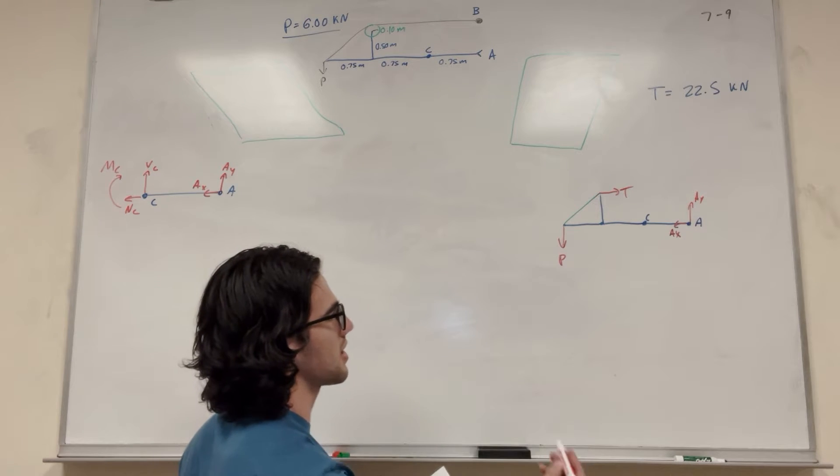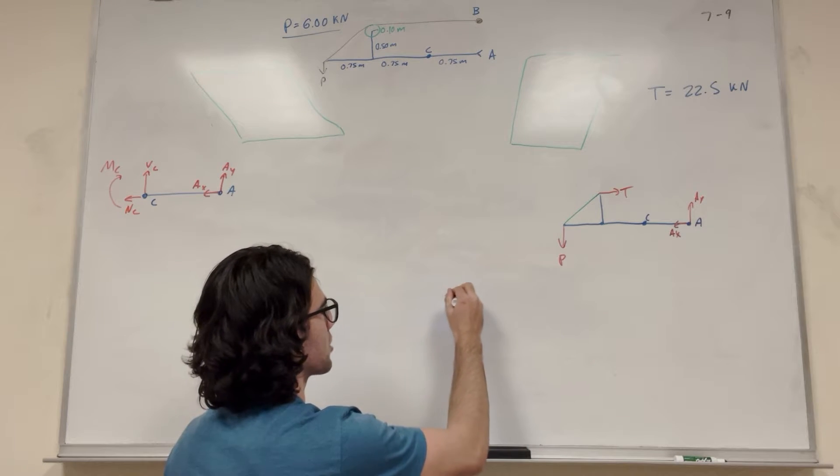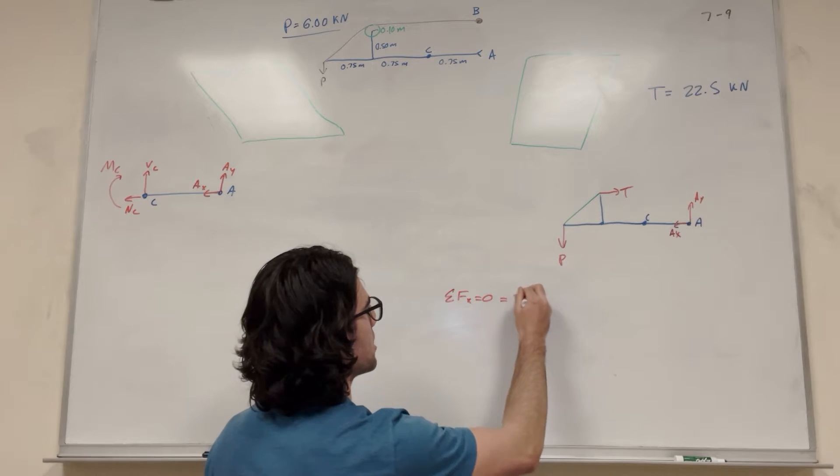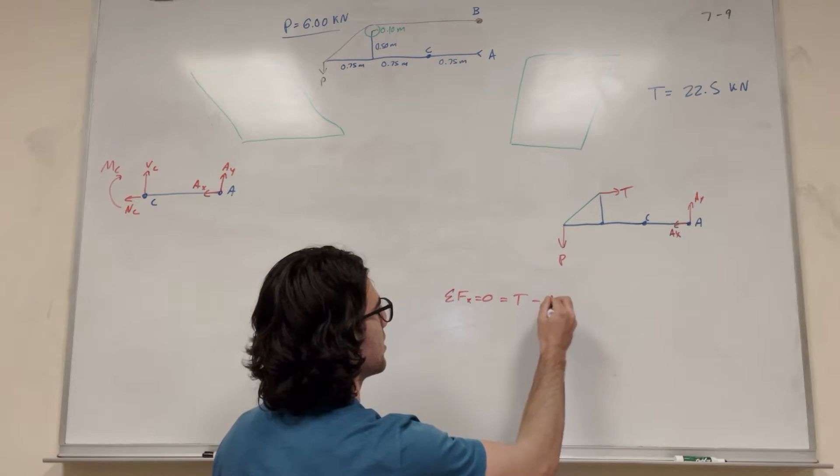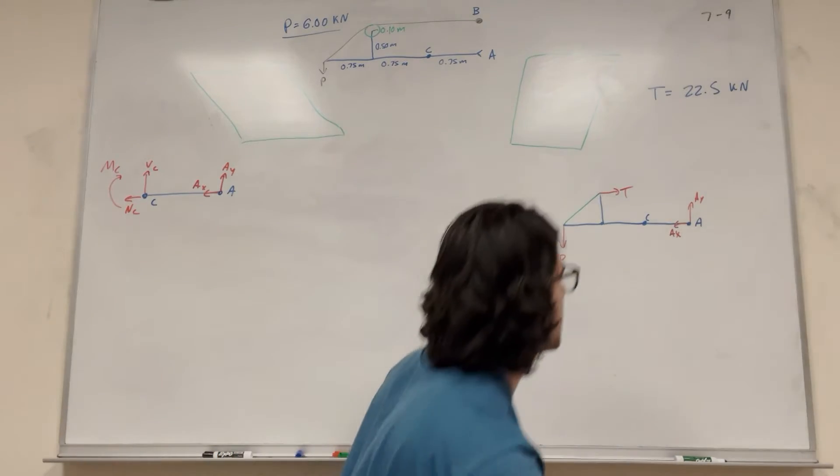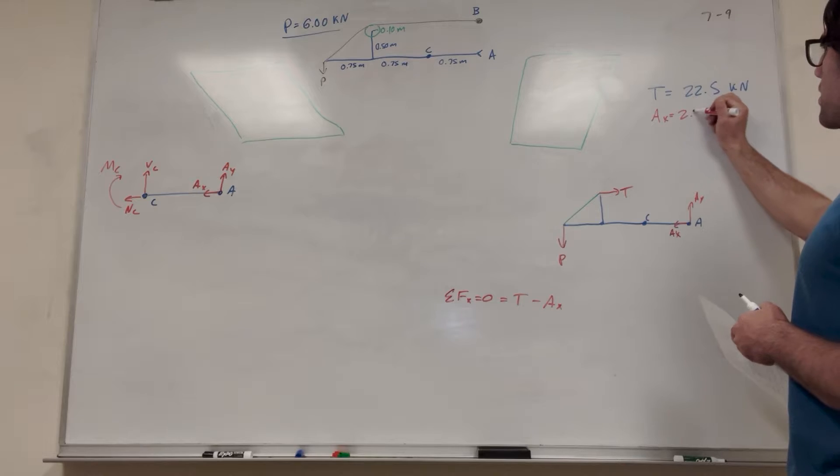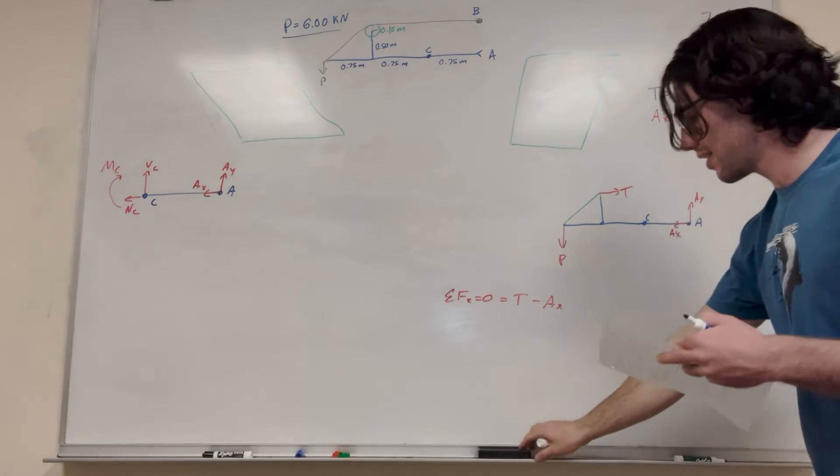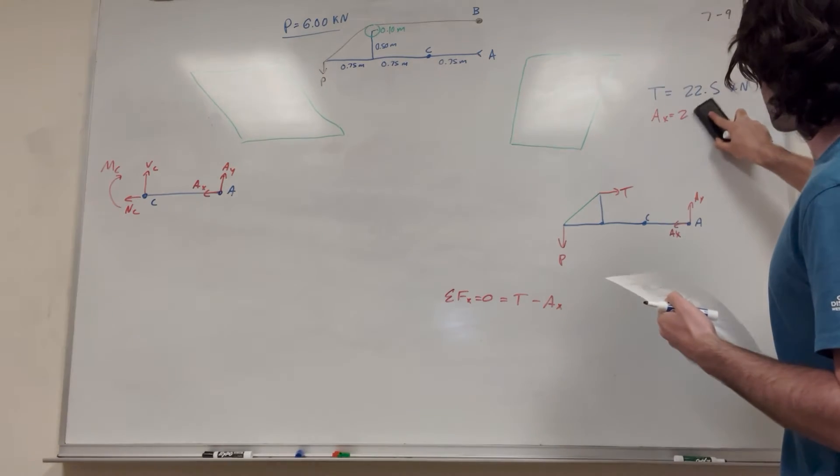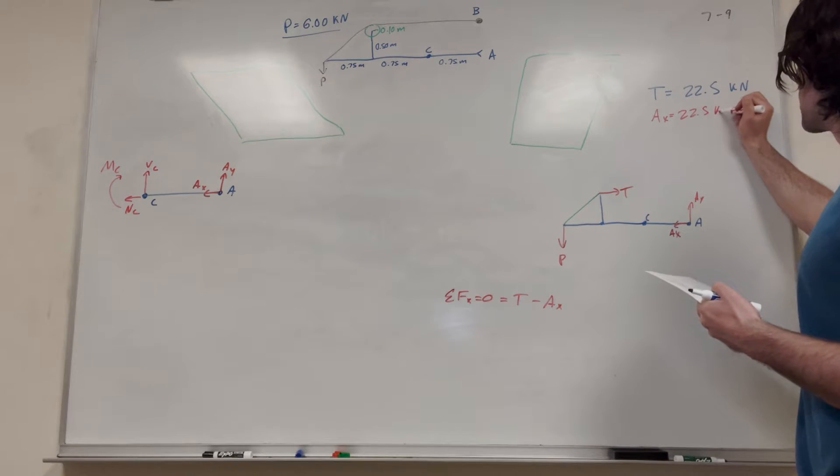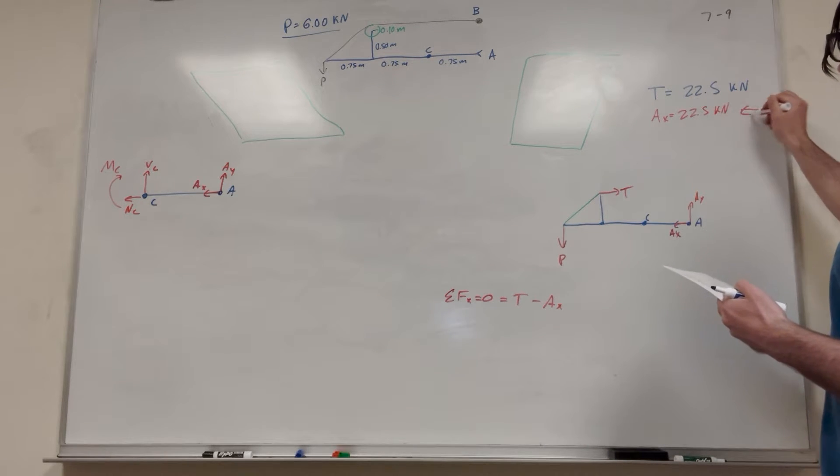So let's go ahead and find A_x and A_y. So sum of the forces in the X direction. We know it's going to be equal to 0. So tension pulls right, so it's going to be tension minus A_x. So that's going to tell us that A_x is equal to tension. It's also equal to 22.5. And then A_x is going to be pushing to the left.